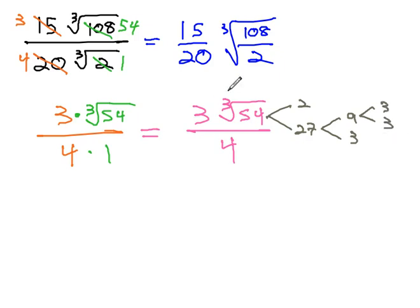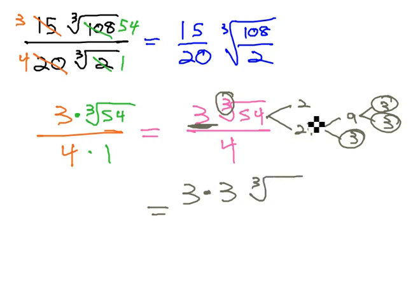You may notice, because the index is 3, we're looking for triples. We have 3 of the number 3 that can come out of the radical. So now, the 3 that's already in front, the 3 that we pull out, left inside the cube root is the number 2 over 4.